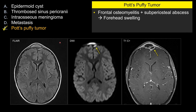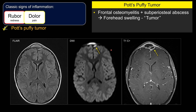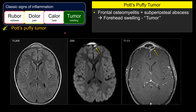For Pott's puffy tumor, the pathogenesis involves frontal calvarian osteomyelitis forming a subperiosteal abscess, which in turn causes diffuse frontal swelling. It presents as a swelling — in other words, a tumor. This is not a neoplasm. This is simply a description of the classic signs of acute inflammation: rubor (redness), dolor (pain), calor (warmth), and tumor, which means swelling.